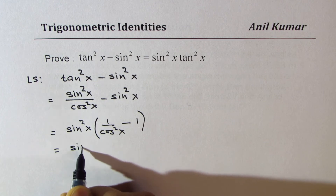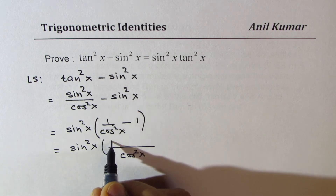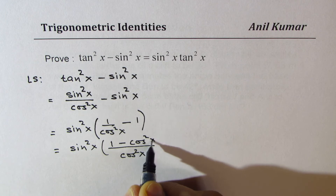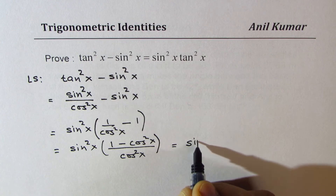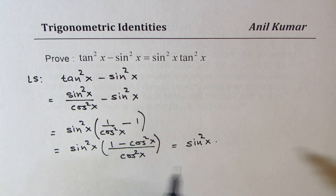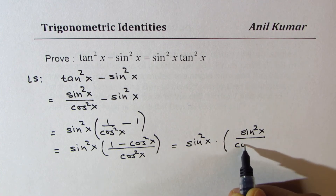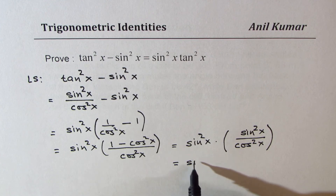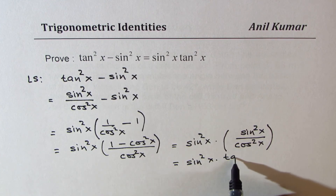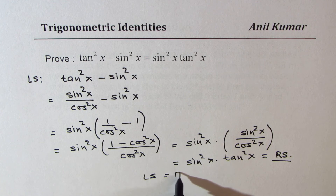That gives us sin square x, with a common denominator of cos square x, which gives us 1 minus cos square x over cos square x. Now 1 minus cos square x is sin square x, so we could write this as sin square x times sin square x over cos square x. Since sin square x over cos square x is tan square x, we can write this as sin square x times tan square x, which is the right side. So we have shown that left side equals right side.